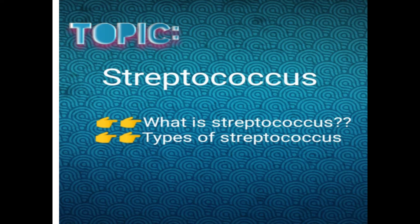Now let's discuss about its types. Streptococcus are divided into two subtypes on the basis of capsule: the first one is R-strain bacteria, and the second one is S-strain bacteria.